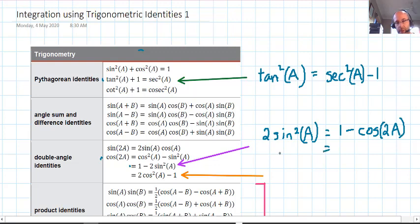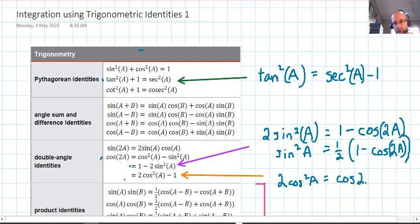And sin²A would be half of (1 - cos 2A), like so. And likewise, the orange one with the orange arrow, we could rearrange that one as well and we'd have initially 2cos²A = cos 2A + 1. So make note of those, we will be using them.